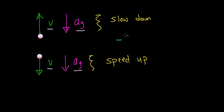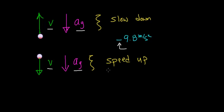The force of gravity does not change depending on which direction the object is initially moving — it is always pulling objects downward. So the negative sign in negative 9.8 meters per second squared indicates that the acceleration is downward toward Earth. When an object moves upward, gravity slows it by 9.8 meters per second each second; when it moves downward, gravity speeds it up by 9.8 meters per second each second.